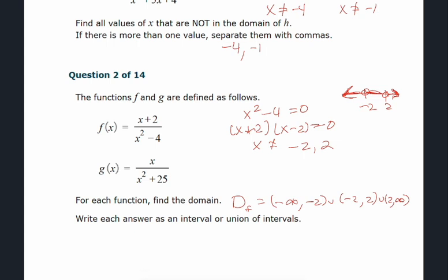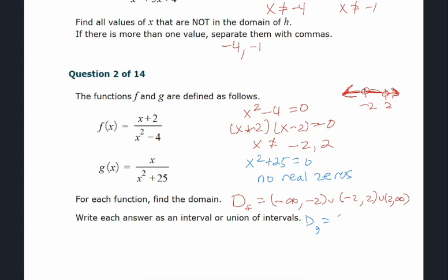For g(x), if we set x² + 25 = 0, we get imaginary solutions — we'd get i's. Since i's don't appear on the real number line, there are no real zeros, meaning there are no problems with this function. The domain for g(x) is (-∞, ∞) — all real numbers. Just because it's a rational function doesn't mean there's a problem; if the denominator gives imaginary solutions, there are no real restrictions.